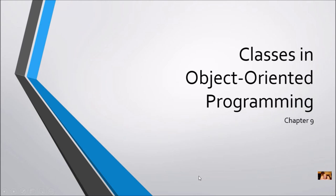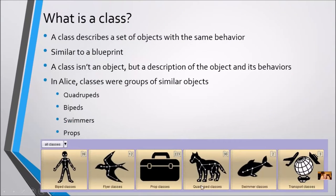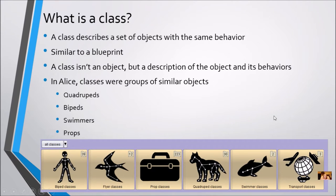This is Chapter 9 on Classes and Object-Oriented Programming. A class describes a set of objects with the same behavior, similar to a blueprint as described in the last video. A class isn't the actual object, but a description of the object and its behaviors. Just like a blueprint isn't actually a house, it's just what's used to create the house.